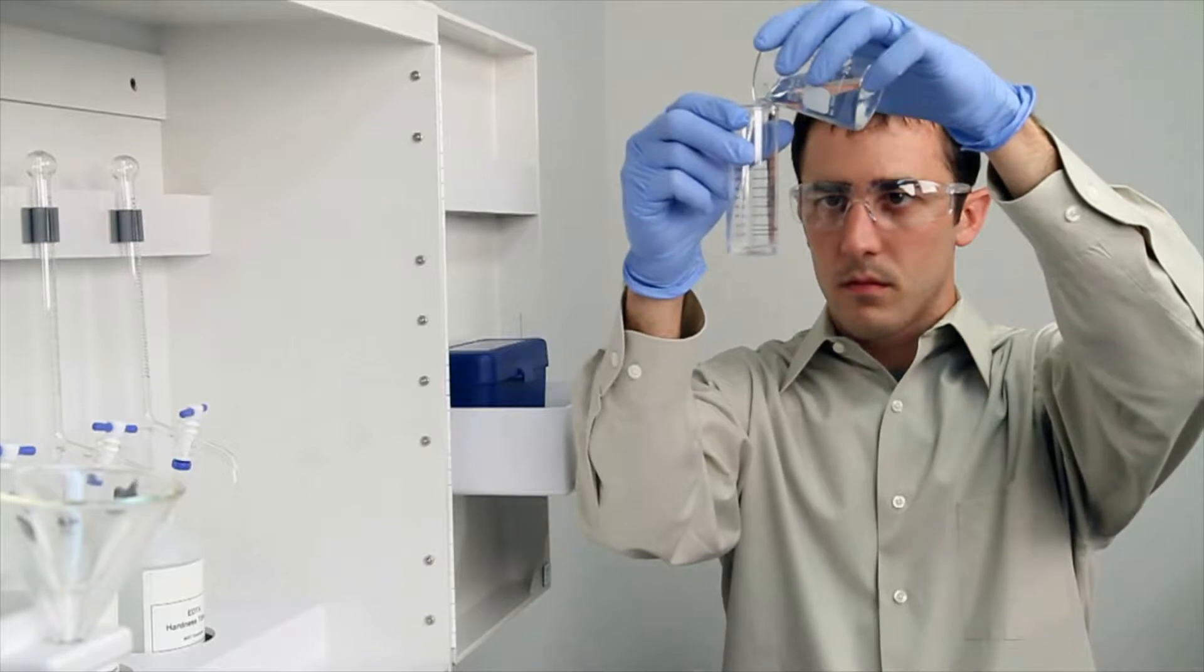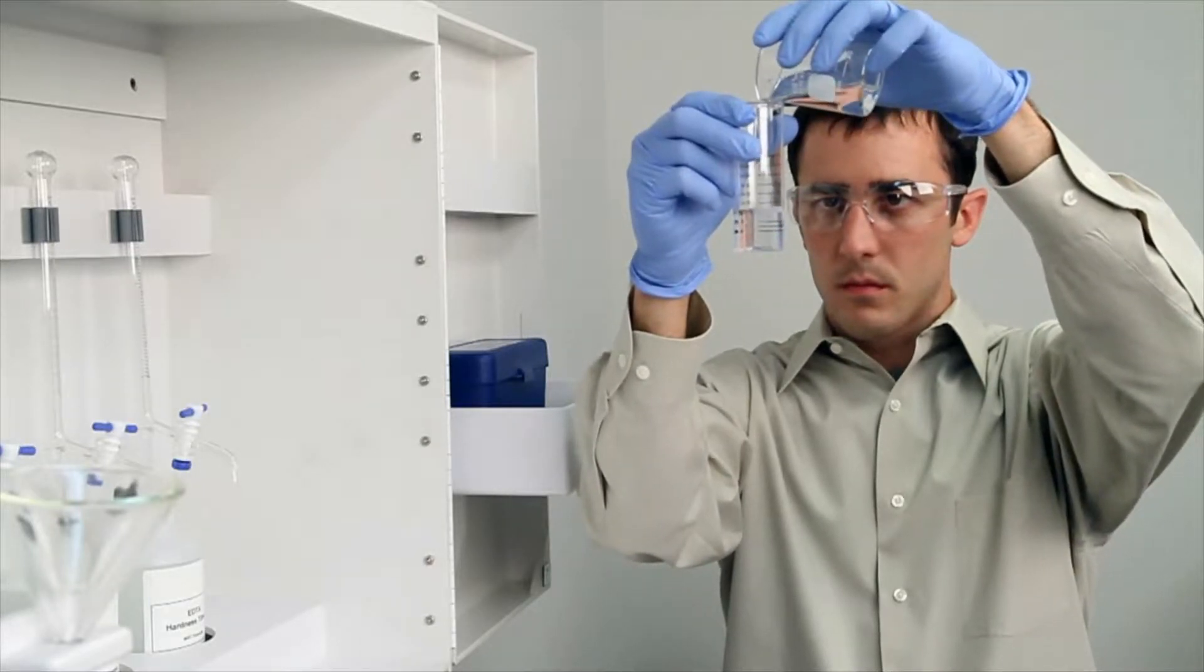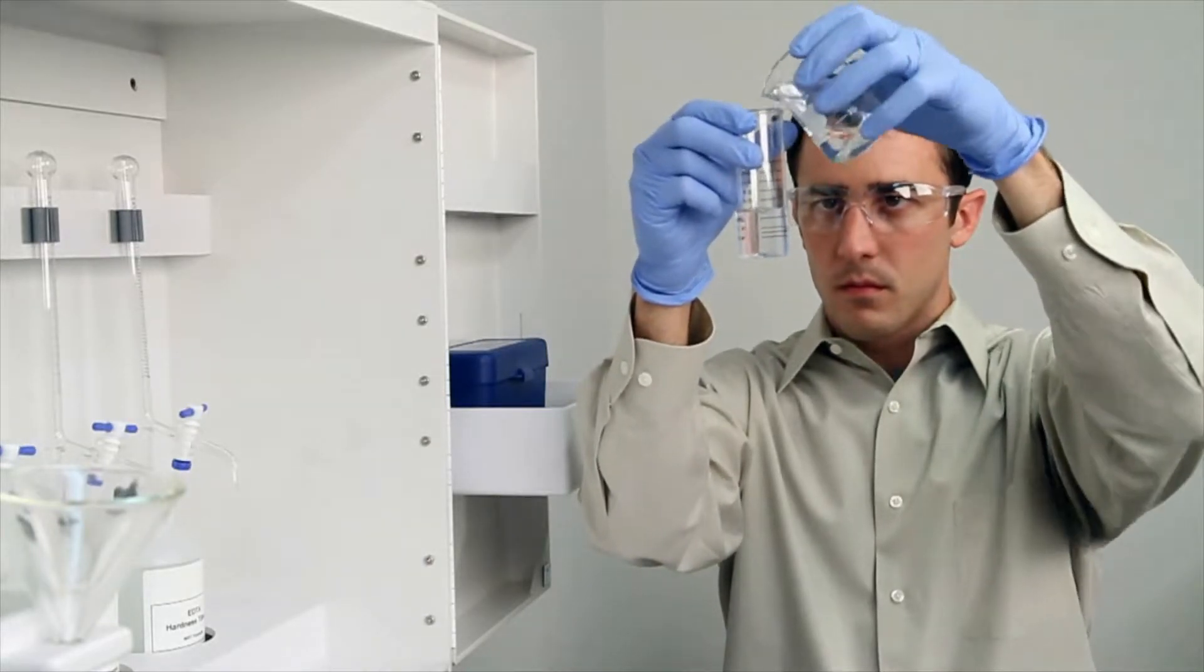To get an accurate sample size, hold the vial close to eye level. Once you feel you have an accurate sample, place the vial on a level surface and bend down to eye level.